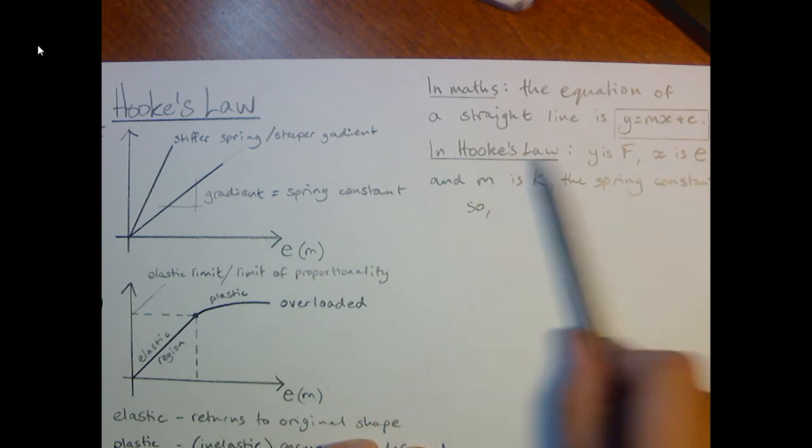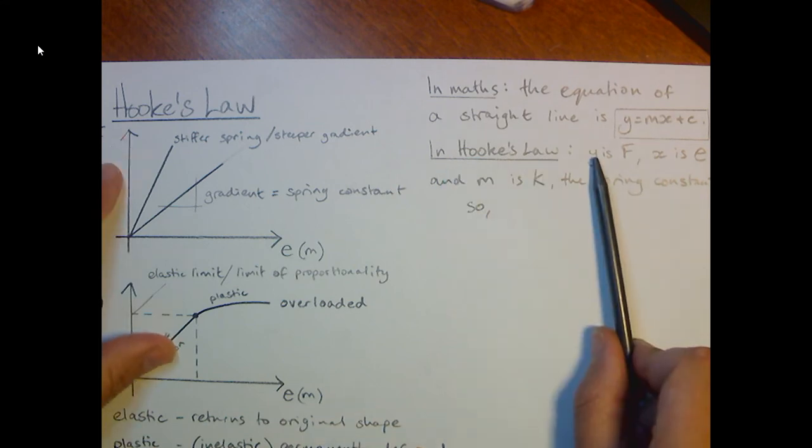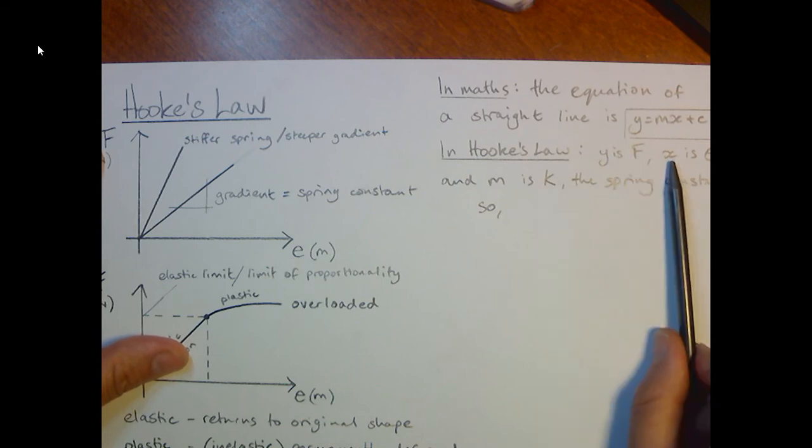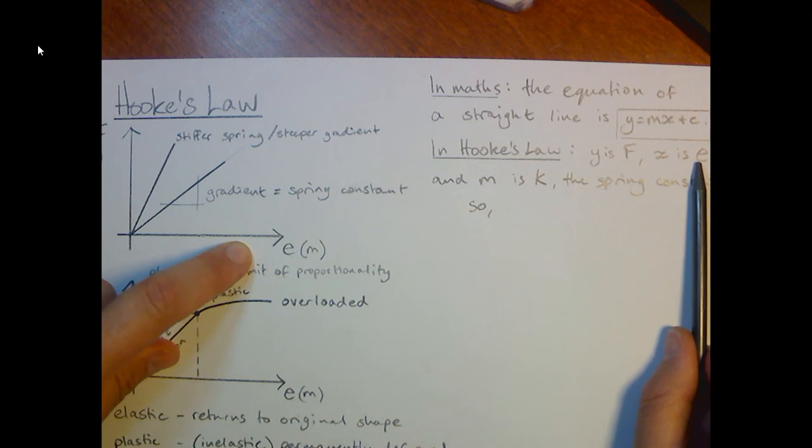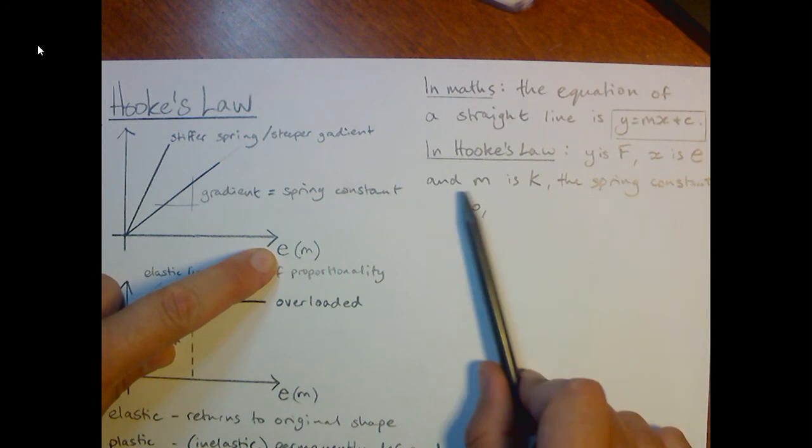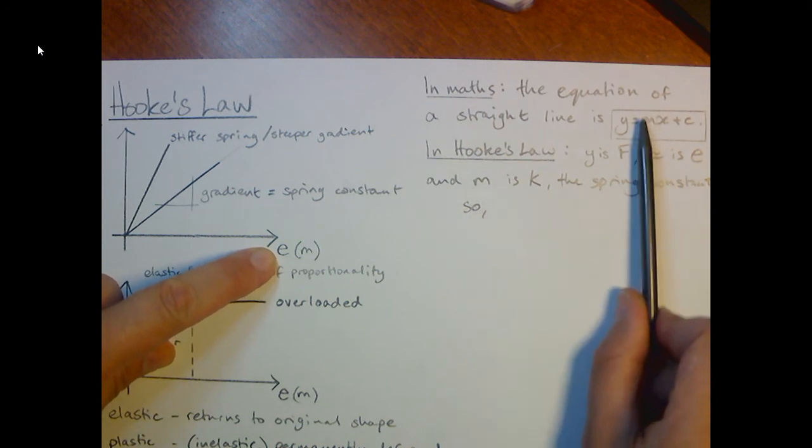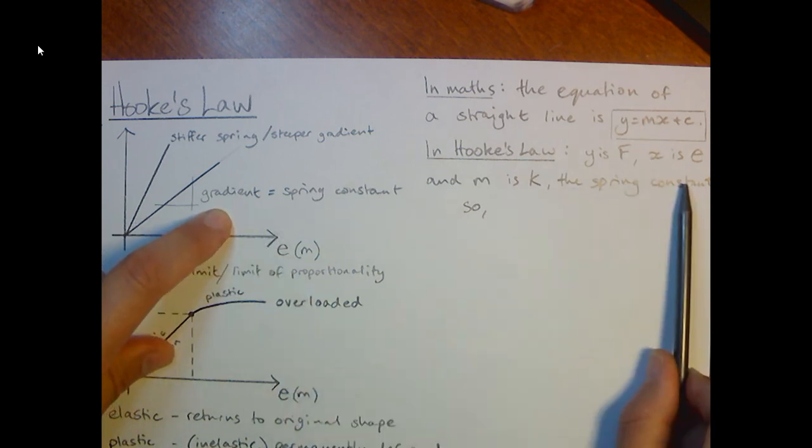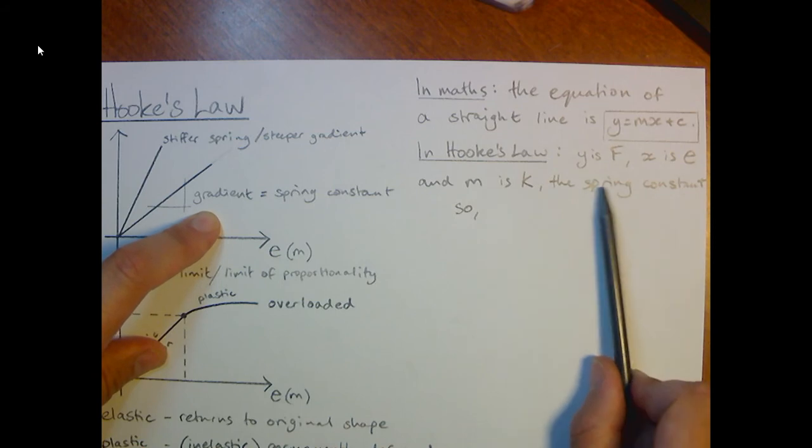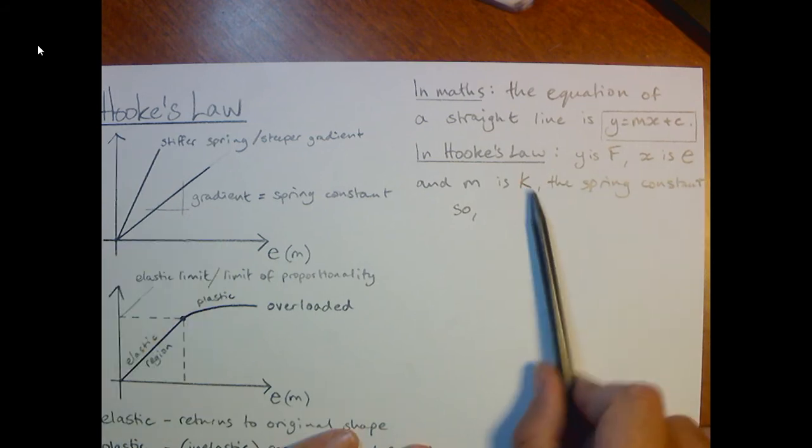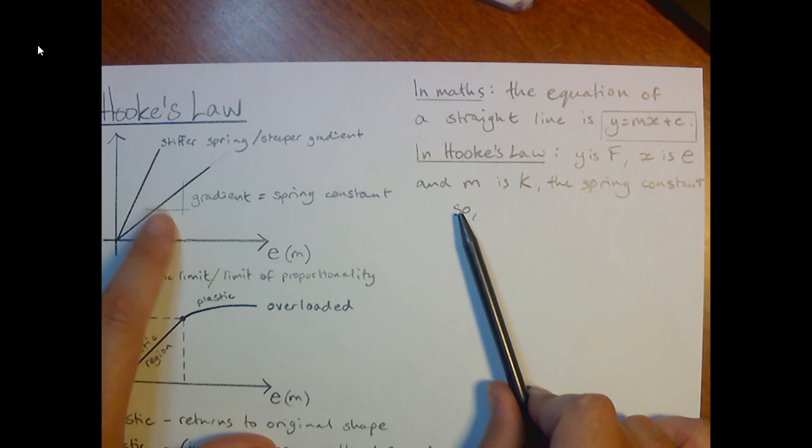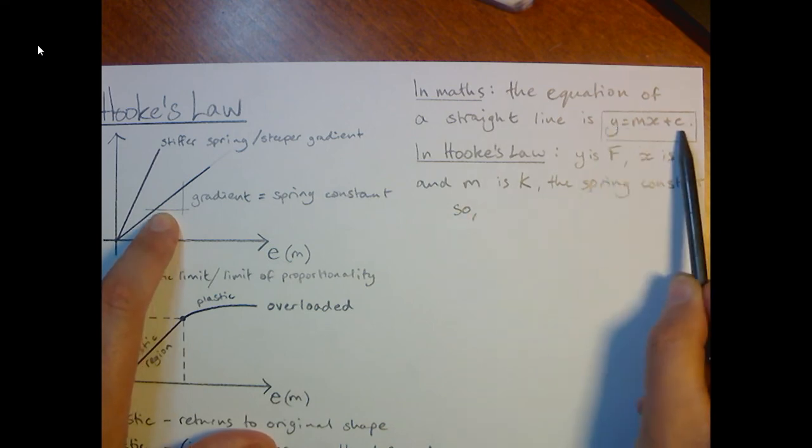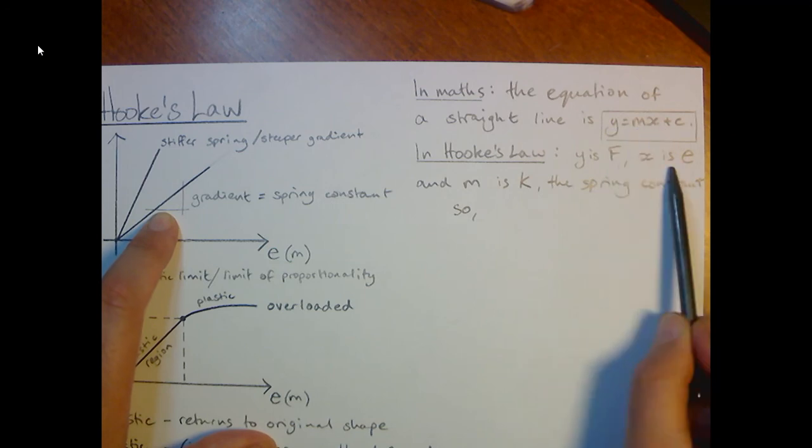So in Hooke's Law, we've got the y-axis. This is the one that goes up and down. We've got that that is the force. So that's F. We've got the x-axis, which goes along the bottom, is e for extension. And m in this maths formula is the gradient. And we've got that the gradient is the spring constant. We use symbol k to represent the spring constant in physics. So the equation for this line, the equation that tells the story of your spring, is the same as this.